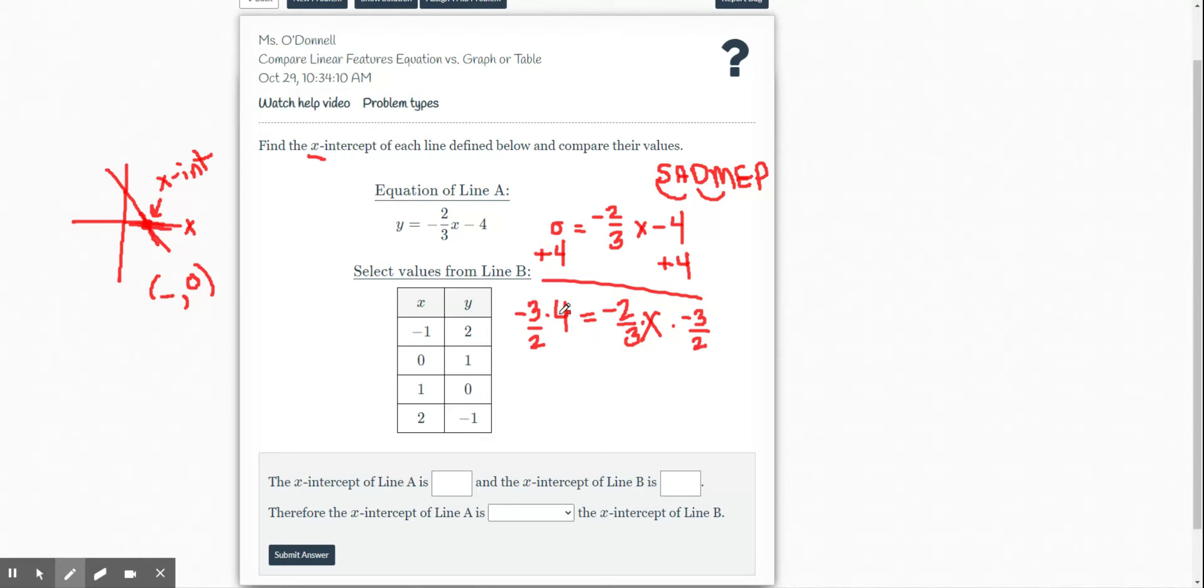So let's see here. I'm going to divide first because that's going to keep my numbers a little smaller. Or you could just multiply negative 3 times 4 is negative 12 divided by 2 gives me negative 6. Or you could have done 4 divided by 2, which is 2 times negative 3, which is also negative 6. Equals my x. So the x-intercept of line A, grab my pointer, the x-intercept of line A is negative 6.